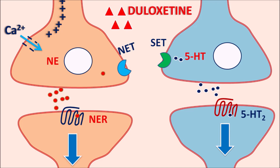Now, Duloxetine can act on both norepinephrine as well as 5-HT neurons — that's why it is called an SNRI, serotonin and norepinephrine reuptake inhibitor. This drug binds to the norepinephrine transporter, thereby inhibiting its activity so that norepinephrine cannot enter the nerve terminals, resulting in the accumulation of norepinephrine within the synaptic cleft. Similarly, Duloxetine blocks the serotonin transporter so that serotonin cannot be taken up into the nerve terminals. By these actions, Duloxetine increases the levels of both norepinephrine and 5-HT within the CNS, which improves the symptoms of depression as well as pain disorders such as fibromyalgia and neuropathic pain.